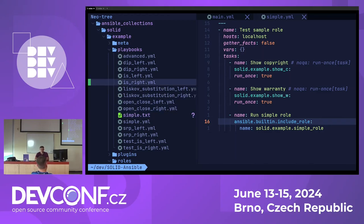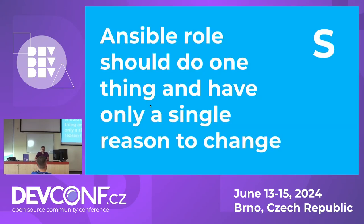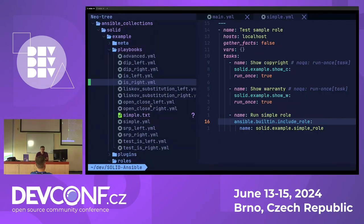Let's start with the first principle: Single Responsibility Principle. An Ansible role should do one thing and have only a single reason to change. When people develop roles, they tend to think 'I have a role doing one thing, and there's another related thing, so let's just add it to the same role.' This leads to a role doing a few things, which creates problems over time.